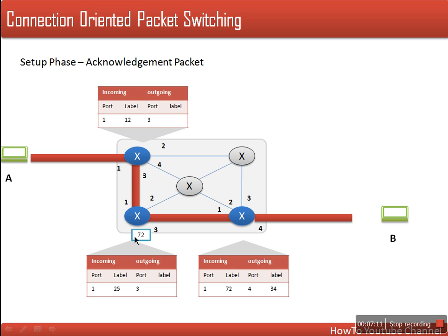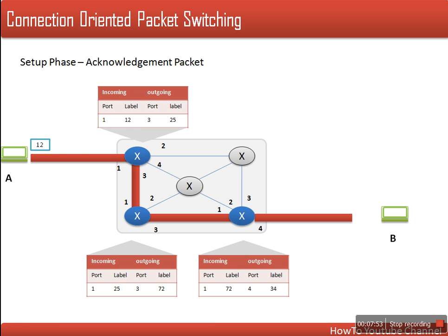This router would also know that this acknowledgement is a part of that request process for which it had recorded this information. This router knows that if a packet is coming from port 3, it has to be forwarded to port 1 with label 25. So far it was not having any idea about the outgoing label — but now it will store this number. It will change the label number and send to the next router, which will also do the same thing: record this information, put label 12, and send it back to the sender.